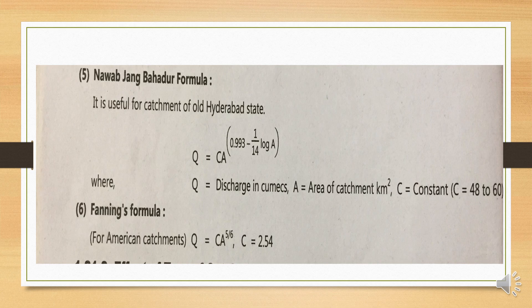Next is Nawab Jung Bahadur formula, specially used for Hyderabad state. The formula is: Q = C × A^(0.993 − 1/(14 × log A)). Here Q is discharge, A is area of catchment, and C is a constant with a value ranging from 48 to 60. You can put one value in that range — but since different people choose different values (48, 50, 56, 60), answers will vary slightly.